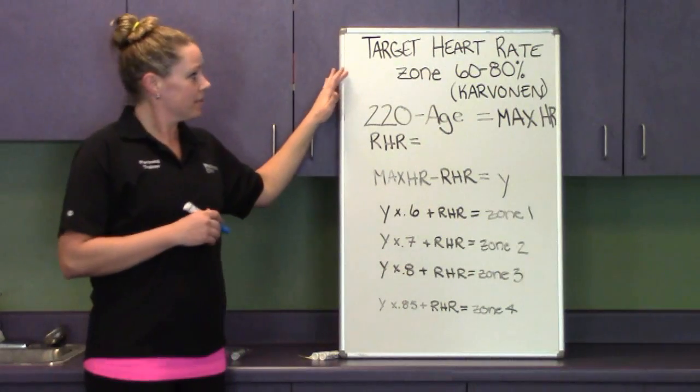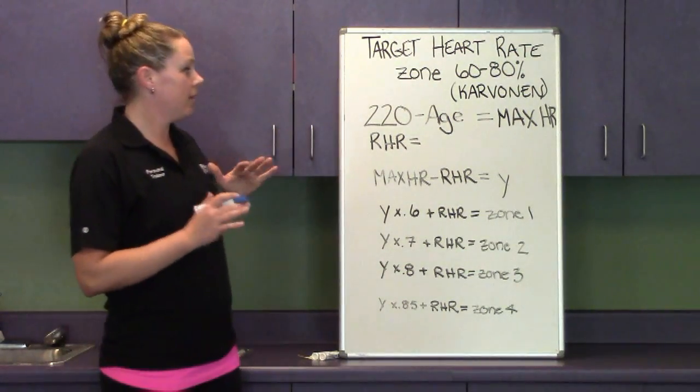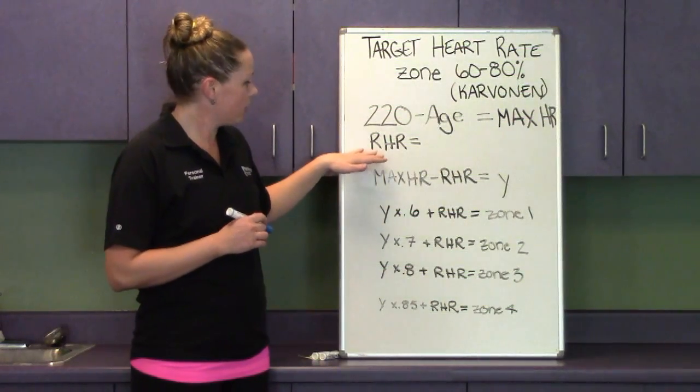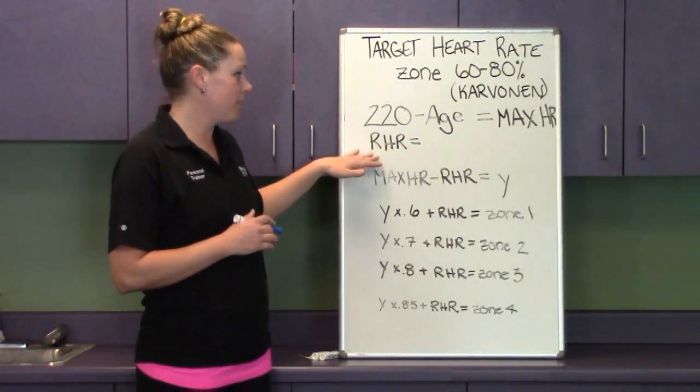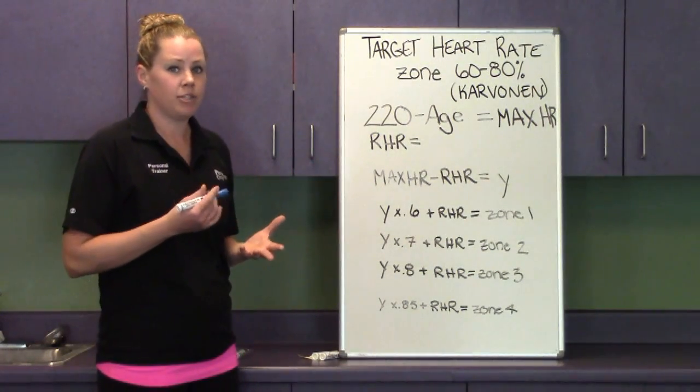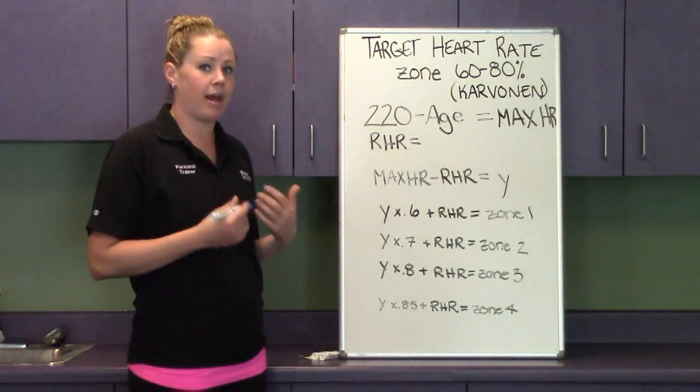There are different formulas for heart rate. We're going to be a little bit basic here, but we're also going to take into effect your individual resting heart rate. And what that's going to allow us to do is make the zone a little more specific to the level of fitness you are at right now.